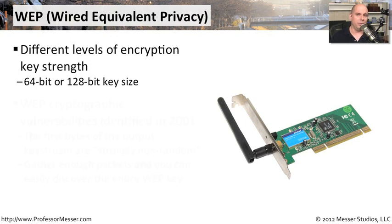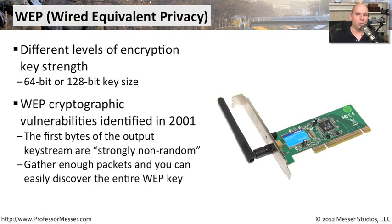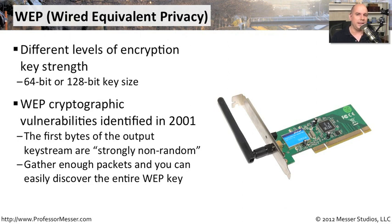However, there was a big problem with WEP. In 2001, we found some very significant cryptographic vulnerabilities inside the mechanisms used to encrypt and decrypt this data. The first bytes of that key stream are what we call strongly non-random. If you're trying to make sure your information is secure and completely encrypted, you want complete randomization — you don't want any of that data to be predictable. And that, of course, opened the door for everyone to be able to break these keys.